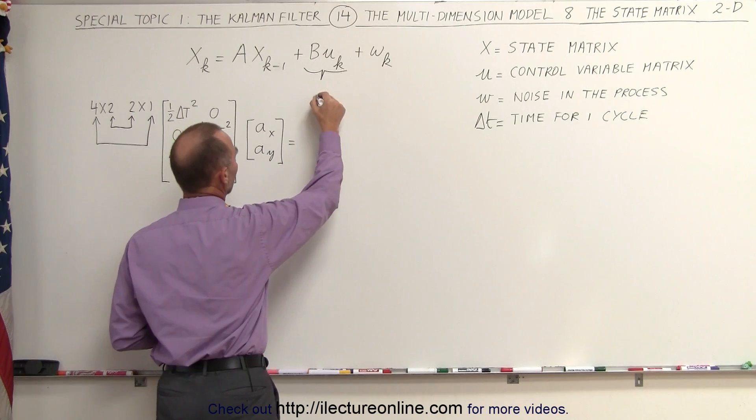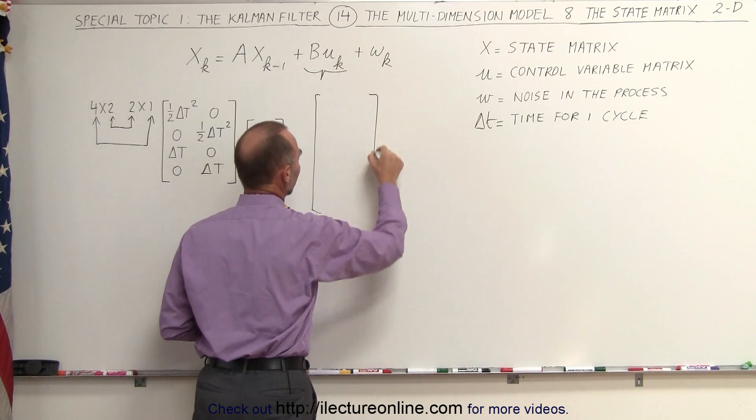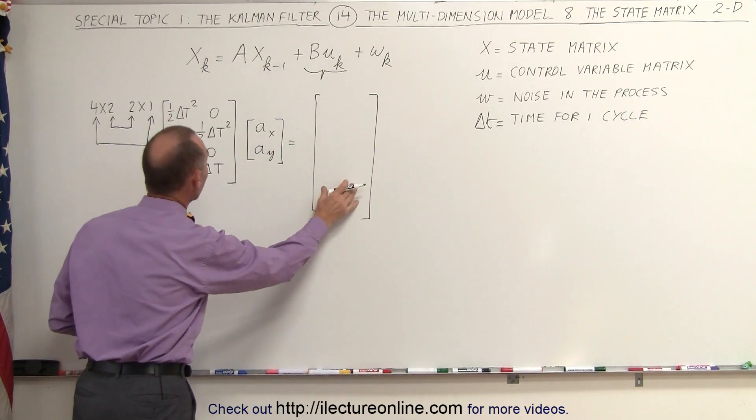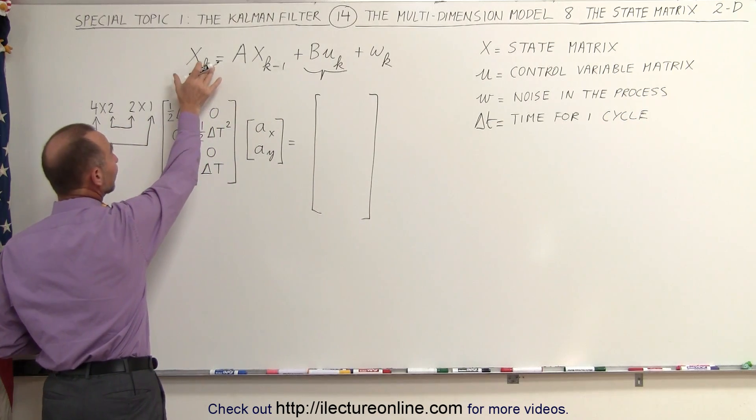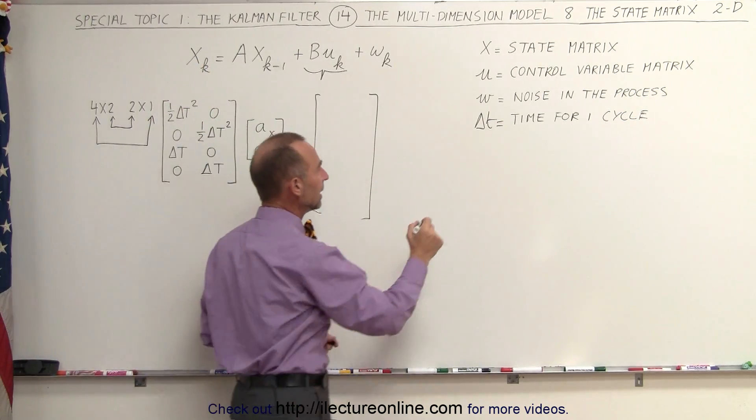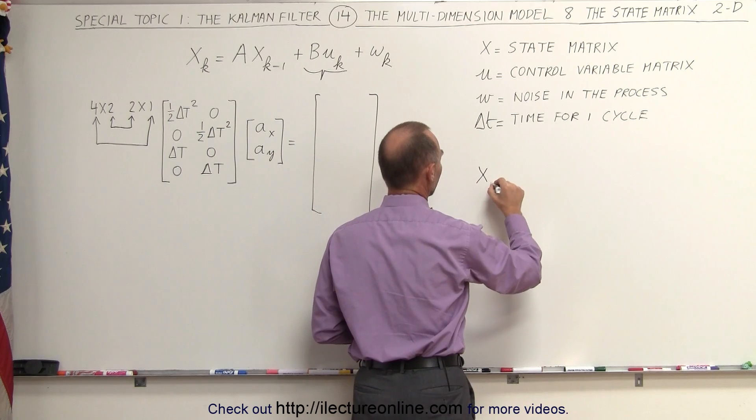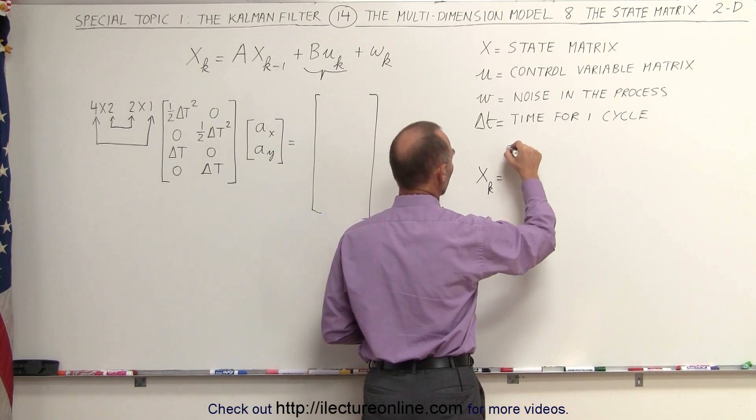So the result of this multiplication is a 4 by 1 matrix that of course has to match the format of the state matrix. Remember that the state matrix, the x sub k is going to be equal to...